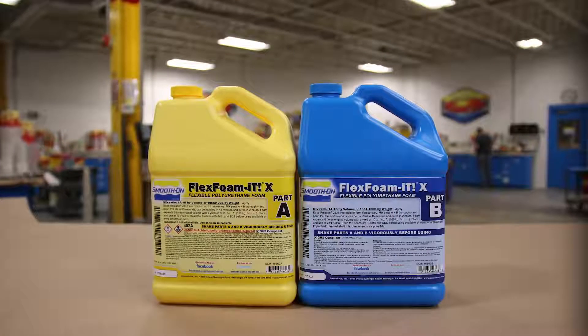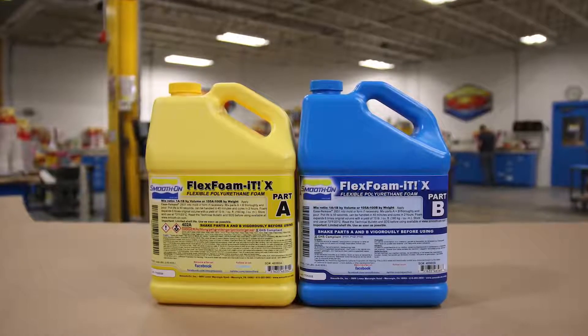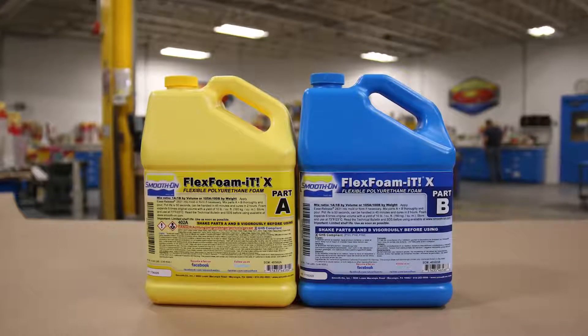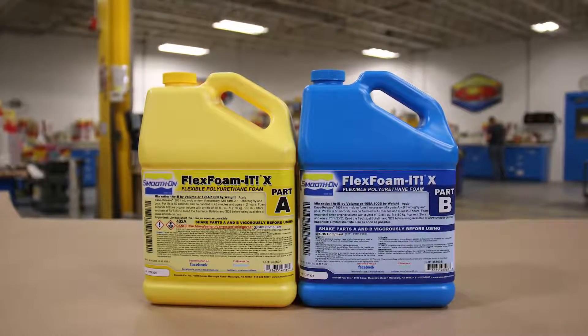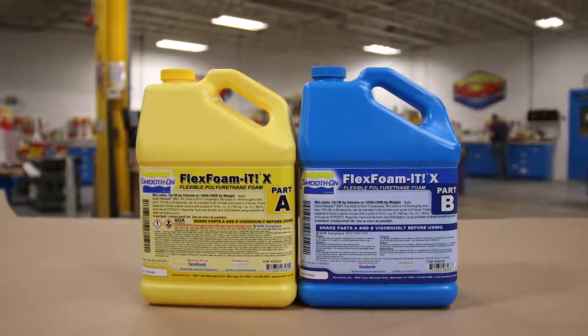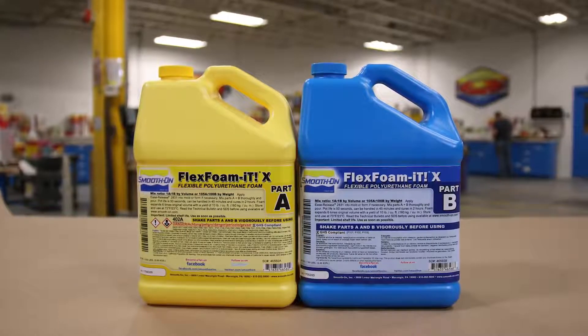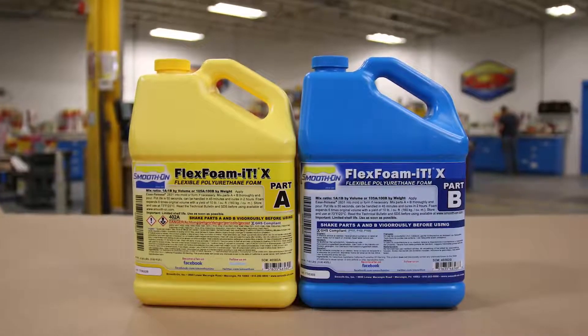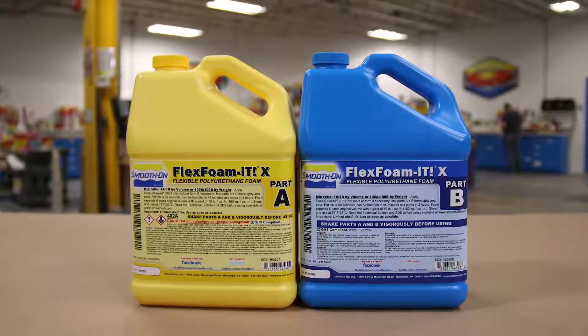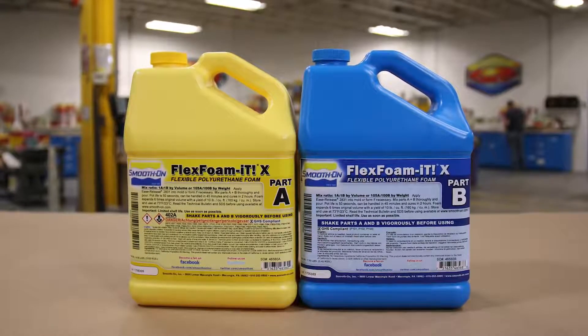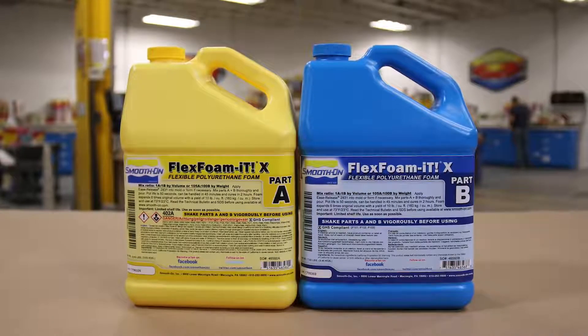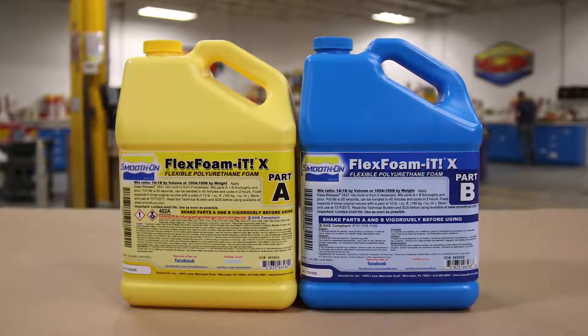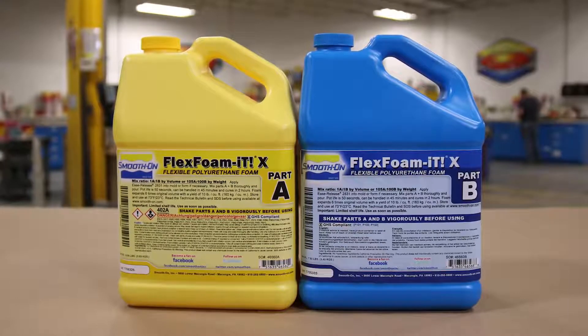For this project we decided to use the Flex Foam A10. This is a one to one mix ratio by volume polyurethane expanding foam. It has a self-skinning and closed cell feature which allows us to cast really nice finishes to our projects, and you'll see with the addition of back pressure the actual face of our casting is going to come out nice and smooth and it's not going to have any void or open cells.